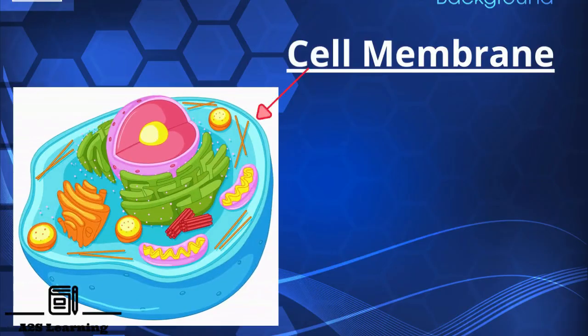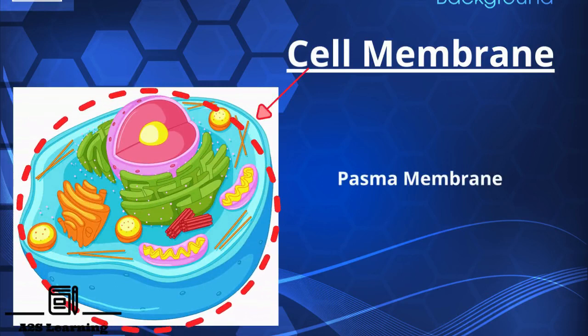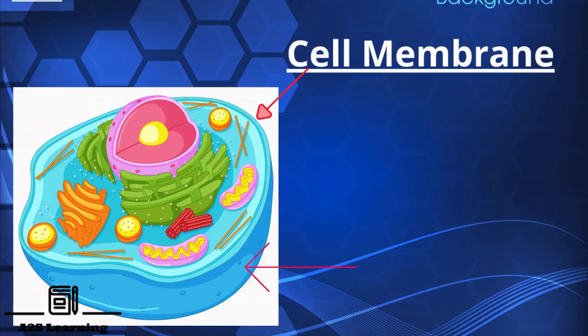The cell membrane, also called plasma membrane, is a very thin elastic membrane that forms the boundary of the cell. It has fine pores which allow only a few substances to enter and leave the cell. Therefore, it is called semi-permeable membrane.